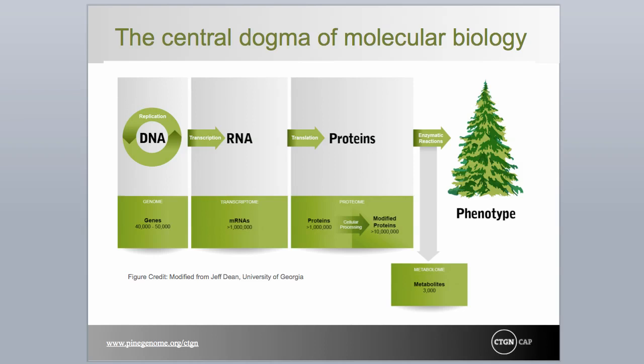The central dogma was preceded by the one-gene, one-enzyme concept advanced by Beadle and Tatum in 1941. Eventually, it was recognized that the one-gene, one-enzyme concept was too simplistic to stand, though it remains a reasonable model for instructional purposes.